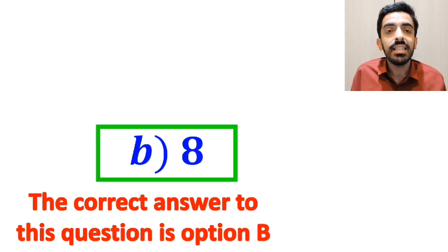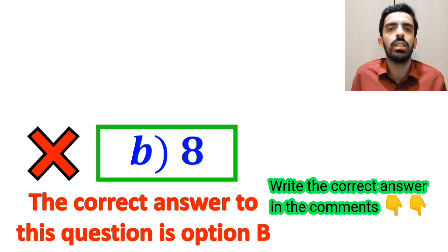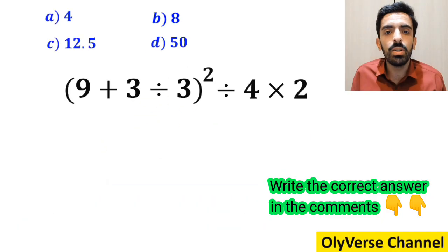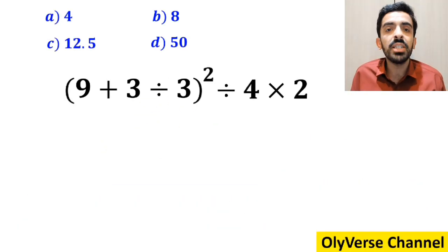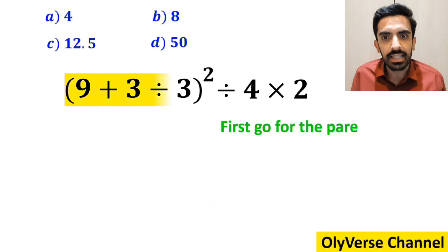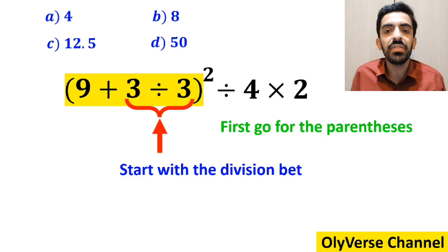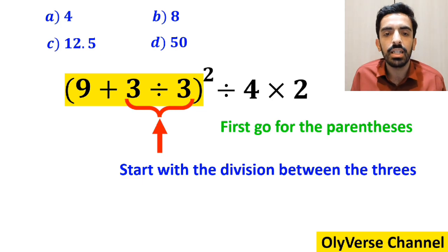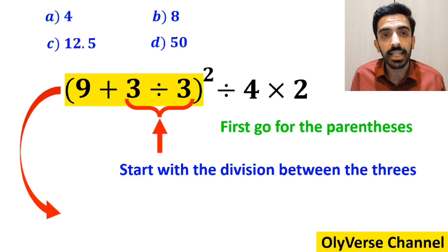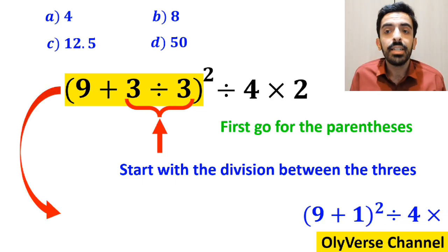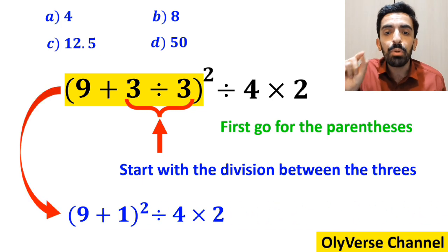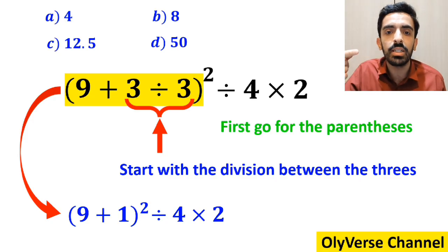However, this answer is absolutely wrong. Also, some other people, to solve this question, first go for the parenthesis and start with the division between the 3's. So instead of this expression, they write (9 plus 1) inside the parenthesis, all squared, divided by 4 multiplied by 2.